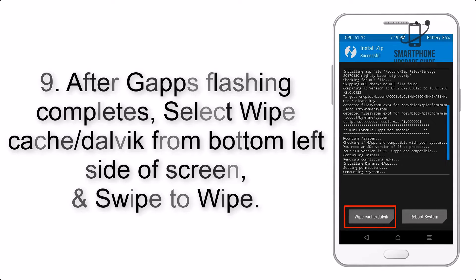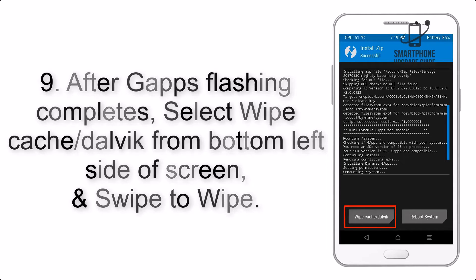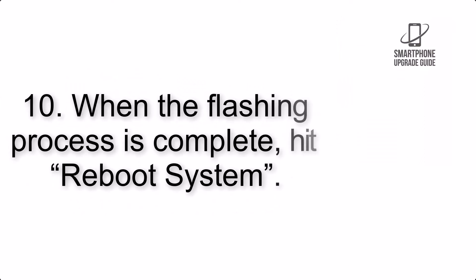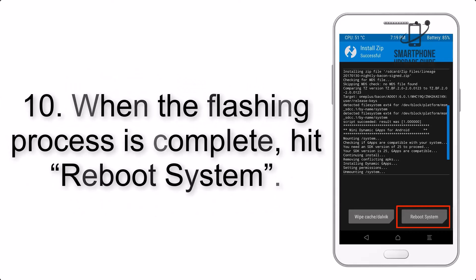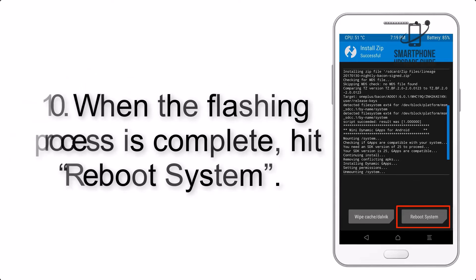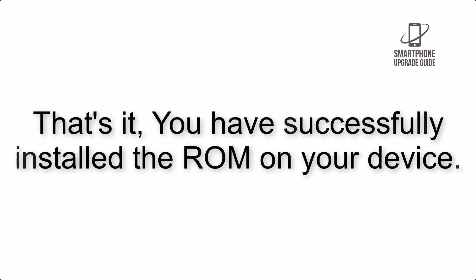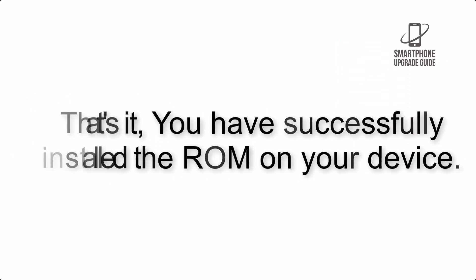Step 8: Flash the GApps zip package in the same manner. Step 9: After GApps flashing completes, select Wipe Cache and Dalvik from the bottom left side of the screen and swipe to wipe. Step 10: When the flashing process is complete, hit Reboot System. That's it — you have successfully installed the ROM on your device.